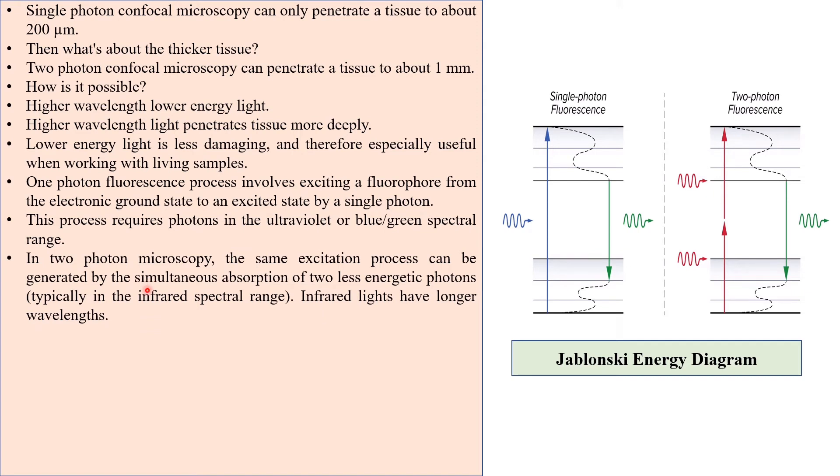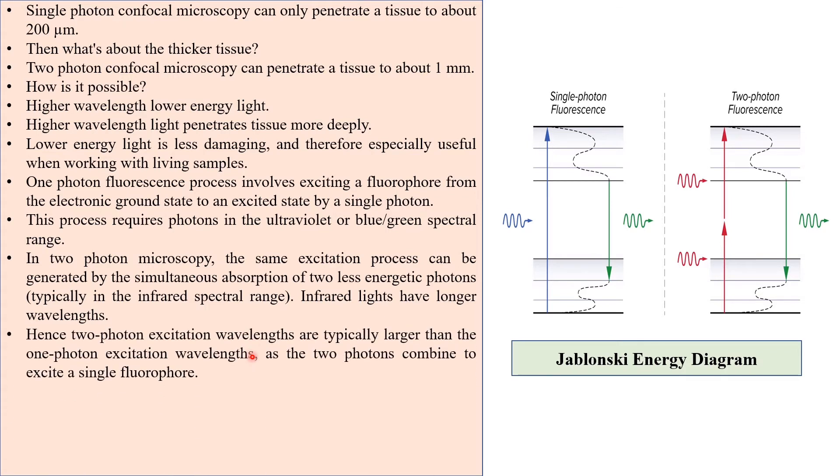In two photon microscopy, the same excitation process can be generated by the simultaneous absorption of two less energetic photons, typically in the infrared spectral range. Infrared lights have longer wavelengths. Hence, two photon excitation wavelengths are typically larger than the one photon excitation wavelengths, as the two photons combine to excite a single fluorophore.